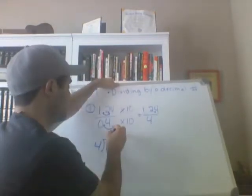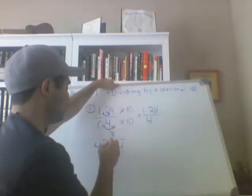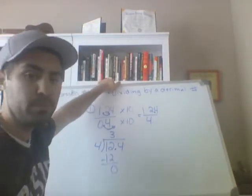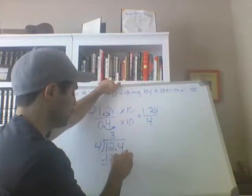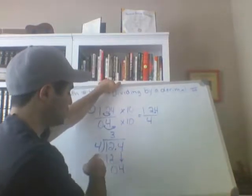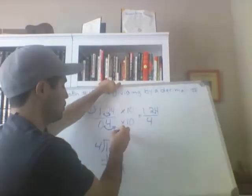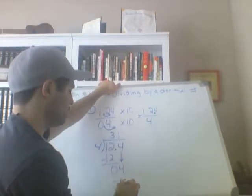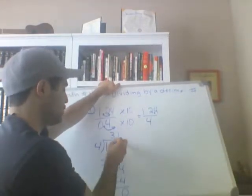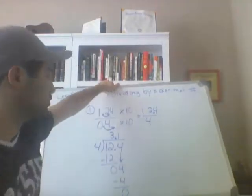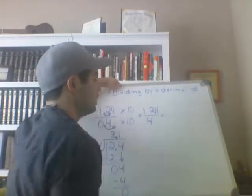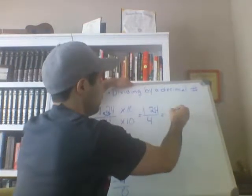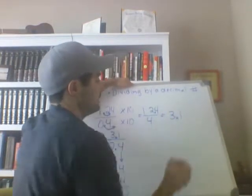4 will go into 12 how many times? 3 times. 3 times 4 is 12. Subtract — all you're going to have left is 0. Then I'm going to bring the 4 straight down. How many times will 4 go into 4? One time. 1 times 4 is 4, and there's going to be a remainder of 0. Then you move the decimal point straight up. So your answer for this is 12.4 divided by 4 is 3 and 1 tenth.